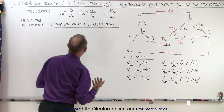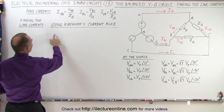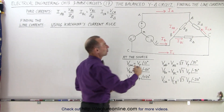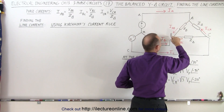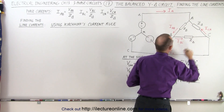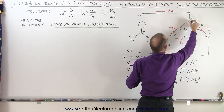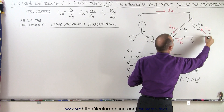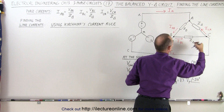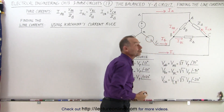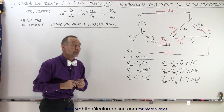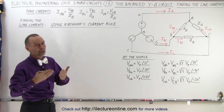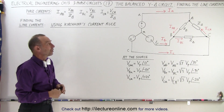To do that, we're going to use Kirchhoff's current rule at each of the three nodes — at A, at B, and at C. We'll look at each node and determine the currents in and the currents out. Using Kirchhoff's rules, we know that the sum of all the currents entering the node must equal the currents leaving the node.